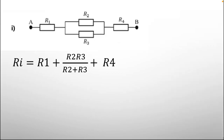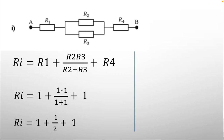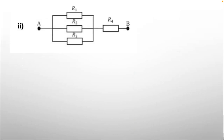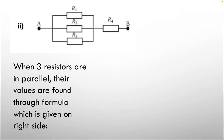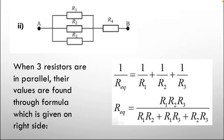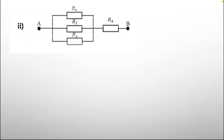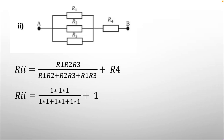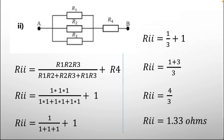Solving circuit 1 by substituting values of 1 ohm each, the answer we get is 5/2, so R1 equivalent = 2.5 ohms. For circuit 2, three resistors are in parallel using the parallel formula, and the fourth resistor R4 is in series with that combination. After solving, R2 equivalent = 1.33 ohms.